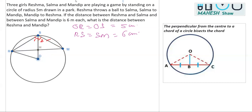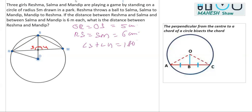Once we prove those two triangles congruent and obtain CPCT, we need to prove another two triangles congruent — this triangle and the other one. We already have RS equals SM, SH is common, and angle 1 equals angle 2 as proved above. So the triangles become congruent, and therefore angle 3 equals angle 4. Their sum is 180 degrees, and since they are equal, each must be 90 degrees.